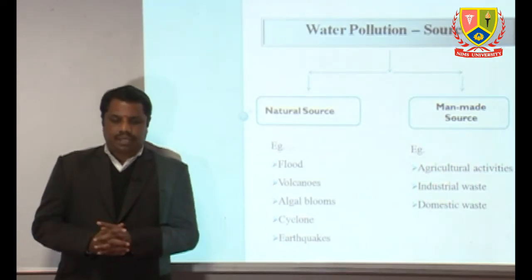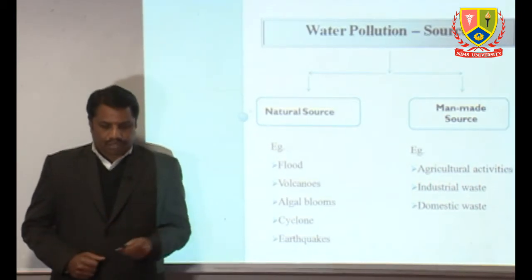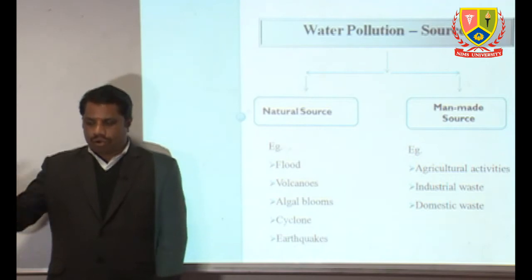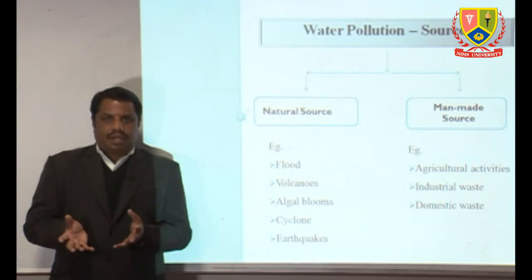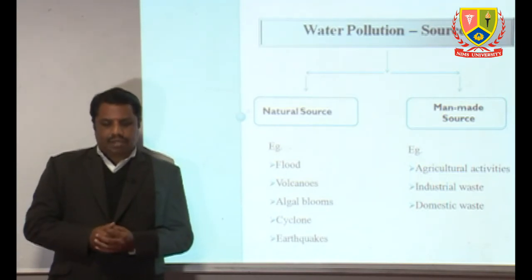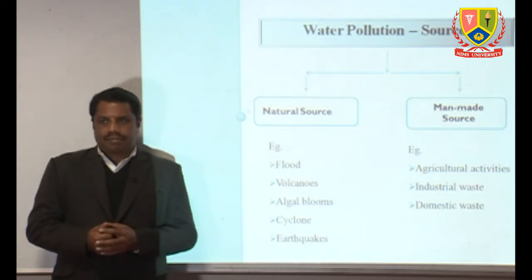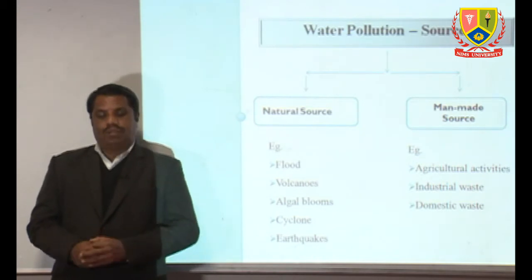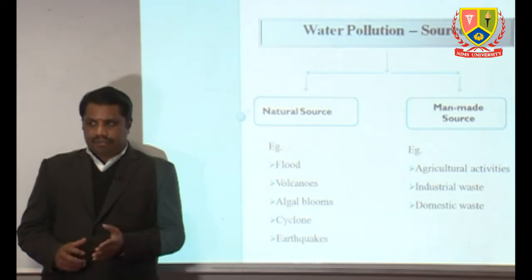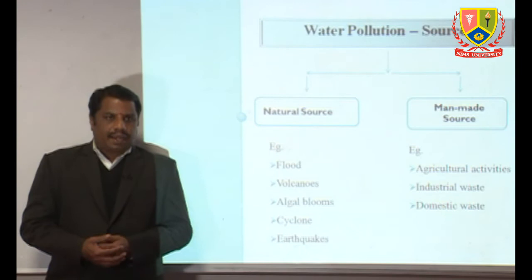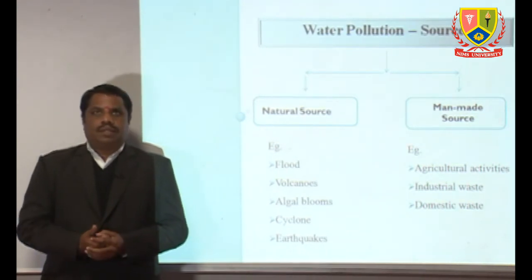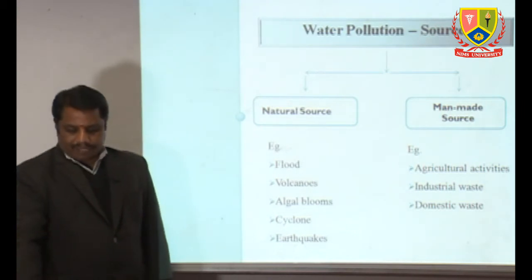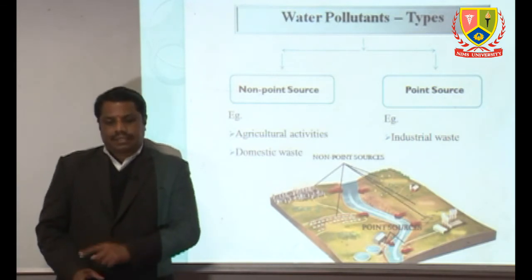Water pollution varies by source and can be categorized in two major ways: natural sources and man-made sources. Natural sources include rain carrying suspended materials, soil erosion, floods, volcanic eruptions, algal blooms, cyclones, and earthquakes. Man-made sources include agriculture activities, industry, and domestic waste, driven by urbanization, industrialization, population growth, and the use of chemical fertilizers and pesticides.